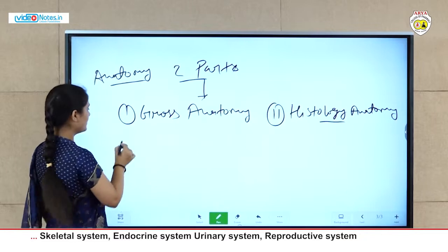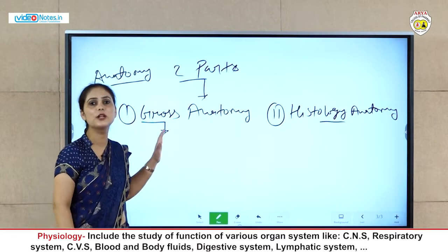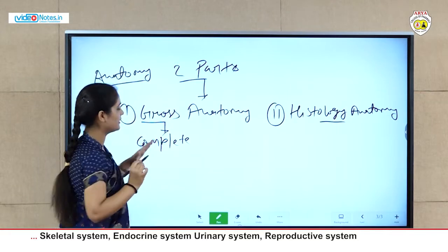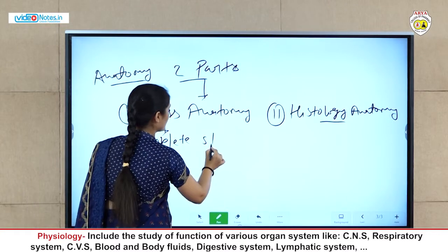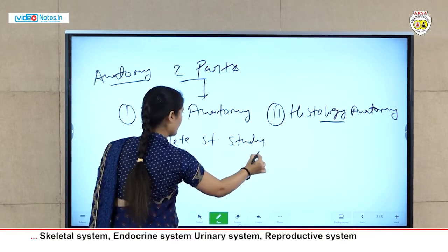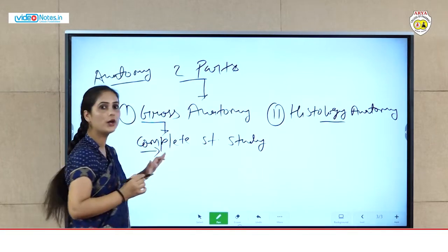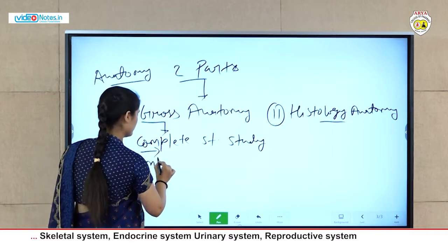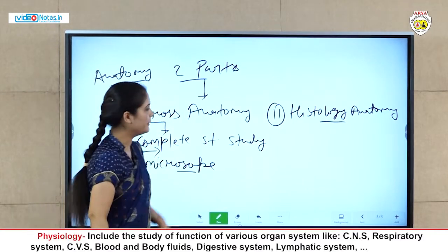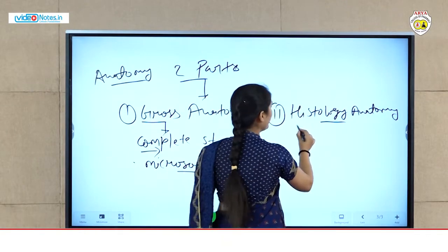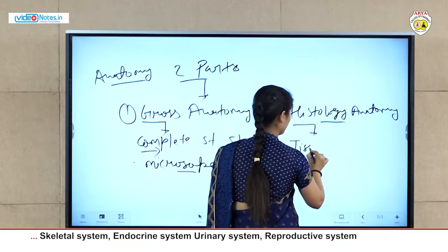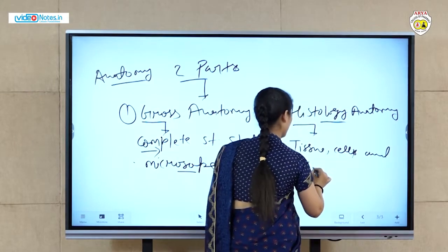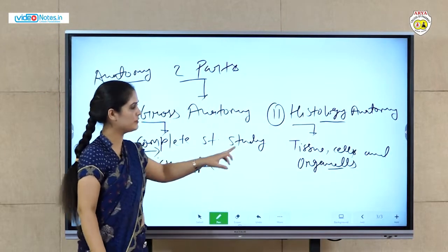Gross anatomy means complete structural study — we do a complete structural study of the body and organ systems. Histology anatomy, on the other hand, is the study of tissues, cells, and organelles. In histology, we study tissues, cells, and organelles at the microscopic level.